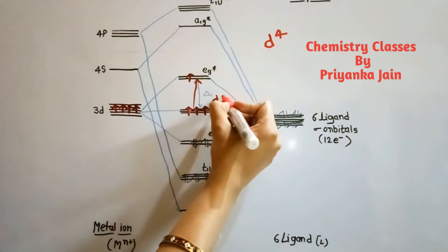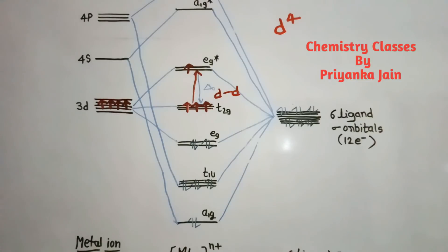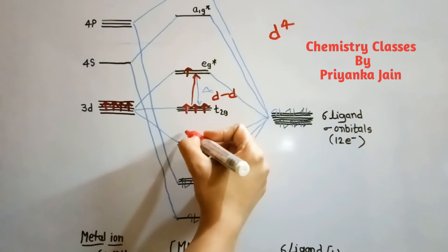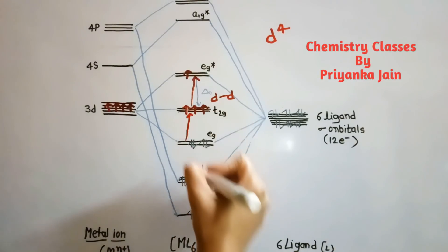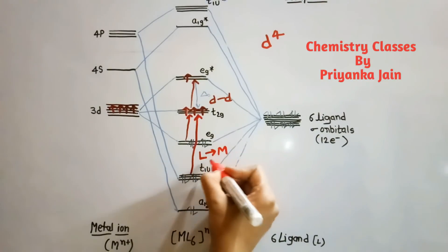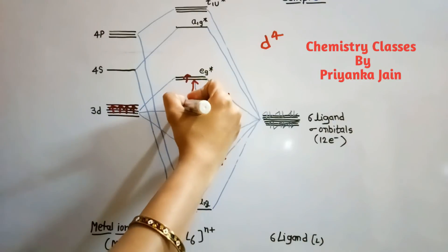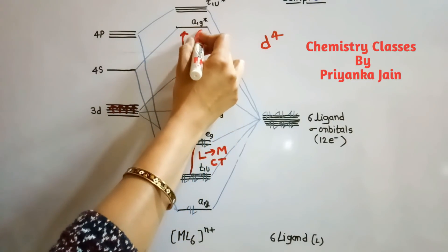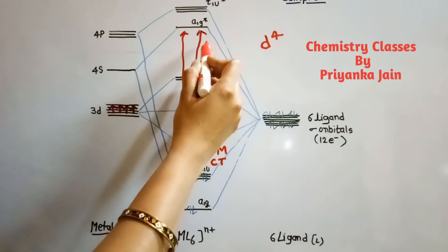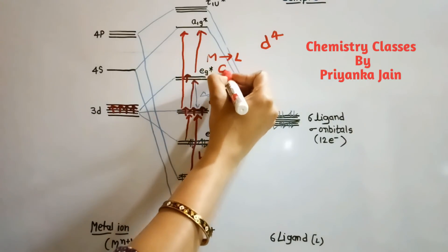This t2g to eg excitation is called a d-d transition. When electrons in the ligand-based lower bonding orbitals are excited to the metal-based levels, this is called a ligand-to-metal charge transfer (LMCT) transition. When electrons are excited from metal-based orbitals to ligand-based orbitals, this is called a metal-to-ligand charge transfer (MLCT) transition.